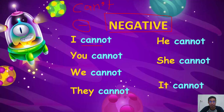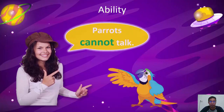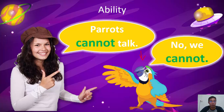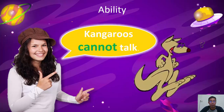This is a negative sentence. For example: parrots cannot talk. Kangaroos cannot talk — kangaroos cannot talk.